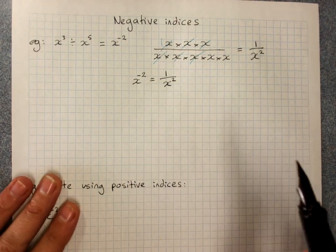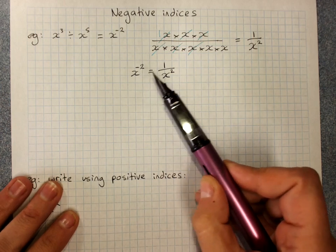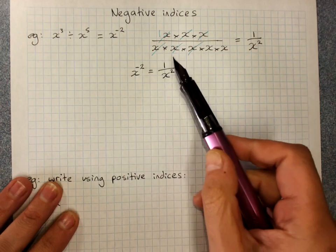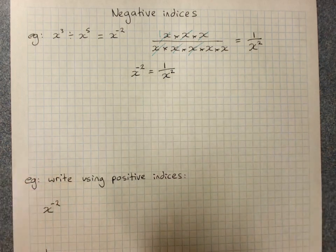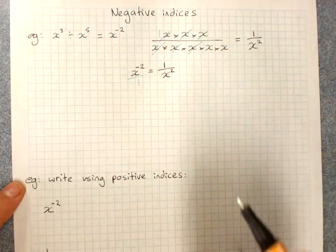This is the rule of negative indices. A negative power is equal to its positive reciprocal. Reciprocal meaning flipping a fraction, because x to the power negative 2 is obviously over 1.